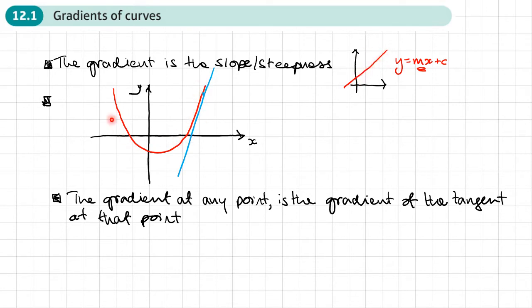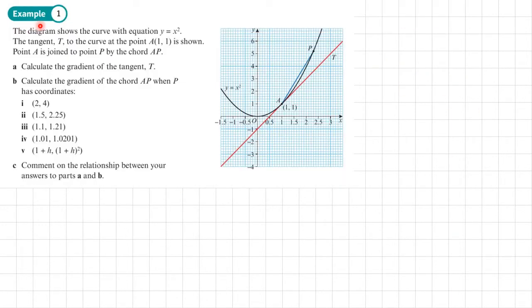Example 1: The diagram shows the curve with equation y equals x squared. The tangent t to the curve at the point A (1,1) is shown to us - the red line.